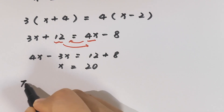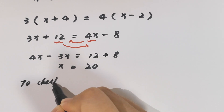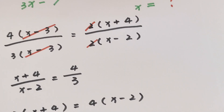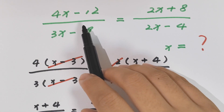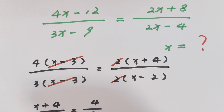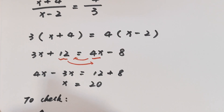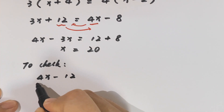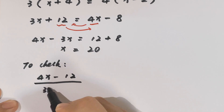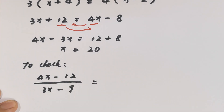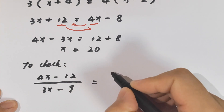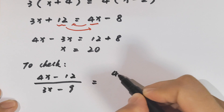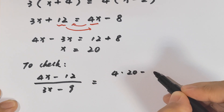Now to check: in our equation, 4x minus 12 over 3x minus 9 equals 2x plus 8 divided by 2x minus 4. When the value of x equals 20, we substitute into 4x minus 12.